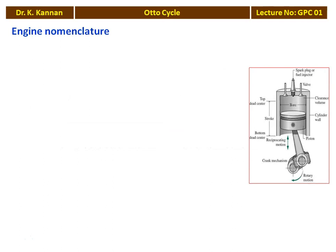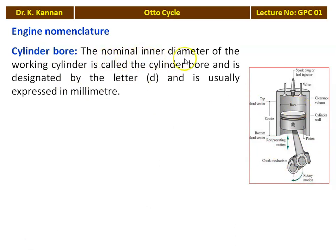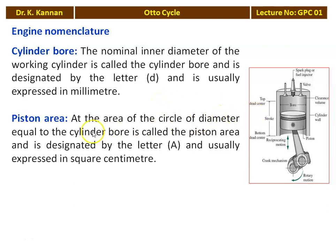Now we review the engine nomenclature. The engine has a piston reciprocating inside, valves, and a bore — the diameter of the cylinder. We have the top dead center and bottom dead center, and a connecting rod connecting the piston with the crankshaft. The cylinder bore is the nominal inner diameter of the working cylinder, designated by D, expressed in millimeters. The piston area A = π/4 × D², the cross-sectional area of the piston, expressed in square centimeters.